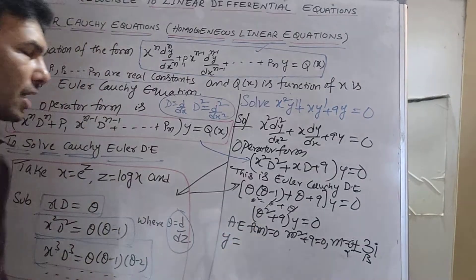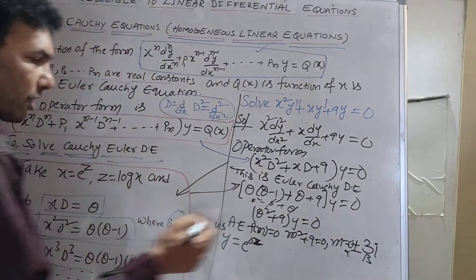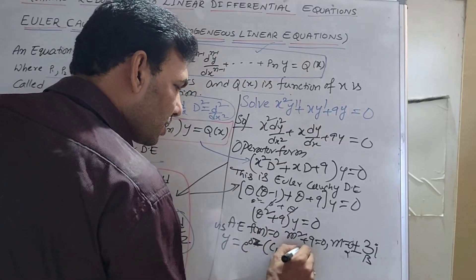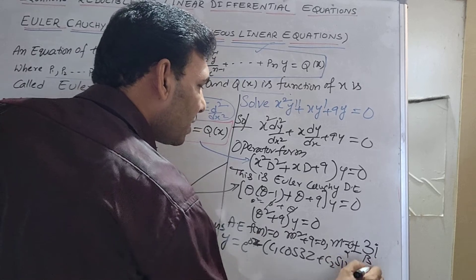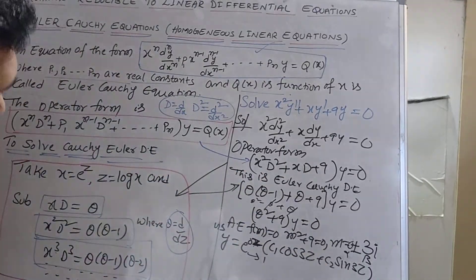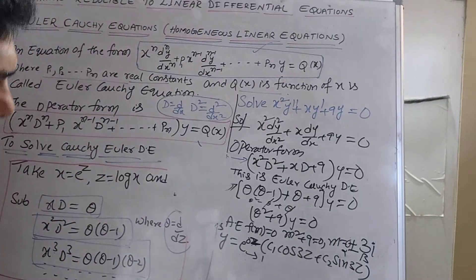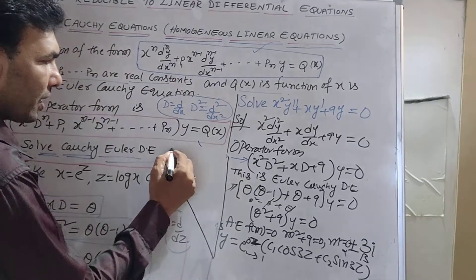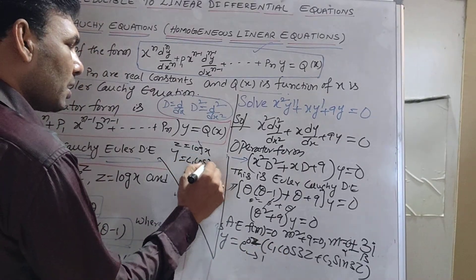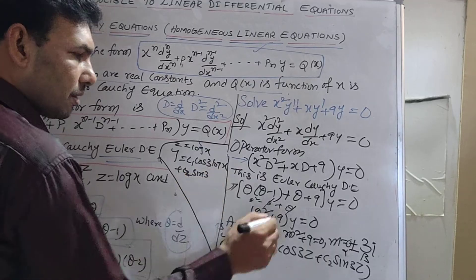Since the roots are complex, the complementary function (general solution) is y = e^(αz) * [c1 cos(βz) + c2 sin(βz)]. With α = 0, this becomes y = e^0 * [c1 cos(3z) + c2 sin(3z)] = c1 cos(3z) + c2 sin(3z). Substituting back z = log(x), the final solution is y = c1 cos(3 log x) + c2 sin(3 log x).